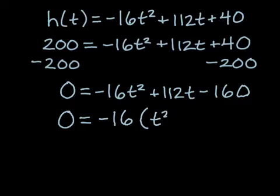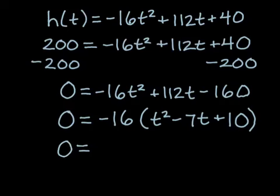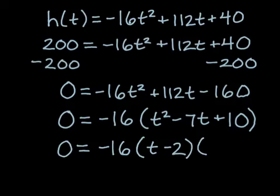this quadratic becomes a lot nicer to deal with. Doing that, I'm going to get t squared minus 7t plus 10. Again, a much nicer kind of thing to actually factor. Looking at this, we want two numbers that multiply to positive 10, but add up to negative 7. The two that are going to work, negative 2 and negative 5. So I get 0 equals negative 16. When I factor that out, it doesn't go away. We need to include it there. Times t minus 2 times t minus 5.